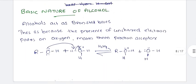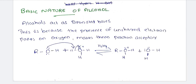Next is the basic nature of alcohol. Alcohol has both acidic and basic nature. We are discussing the basicity of alcohol. Alcohol acts as a Bronsted base. Due to the lone pairs of electrons on the oxygen atom in ROH, alcohol acts as a Bronsted base and can accept a proton.